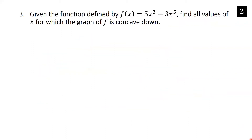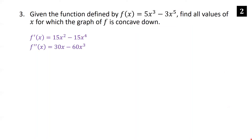Given the function f of x equals 5x cubed minus 3x to the fifth, find all values of x where the graph of f is concave down. The second derivative tells us about concavity, so we need to differentiate twice. The first derivative, using the power rule, is 15x squared minus 15x to the fourth.